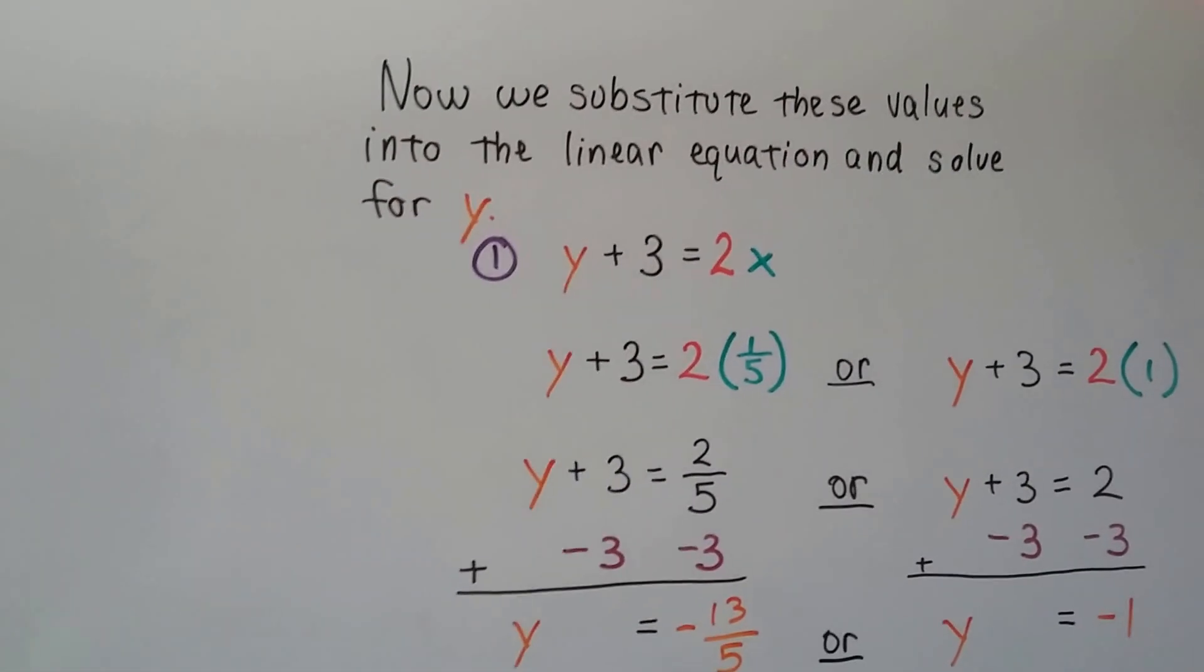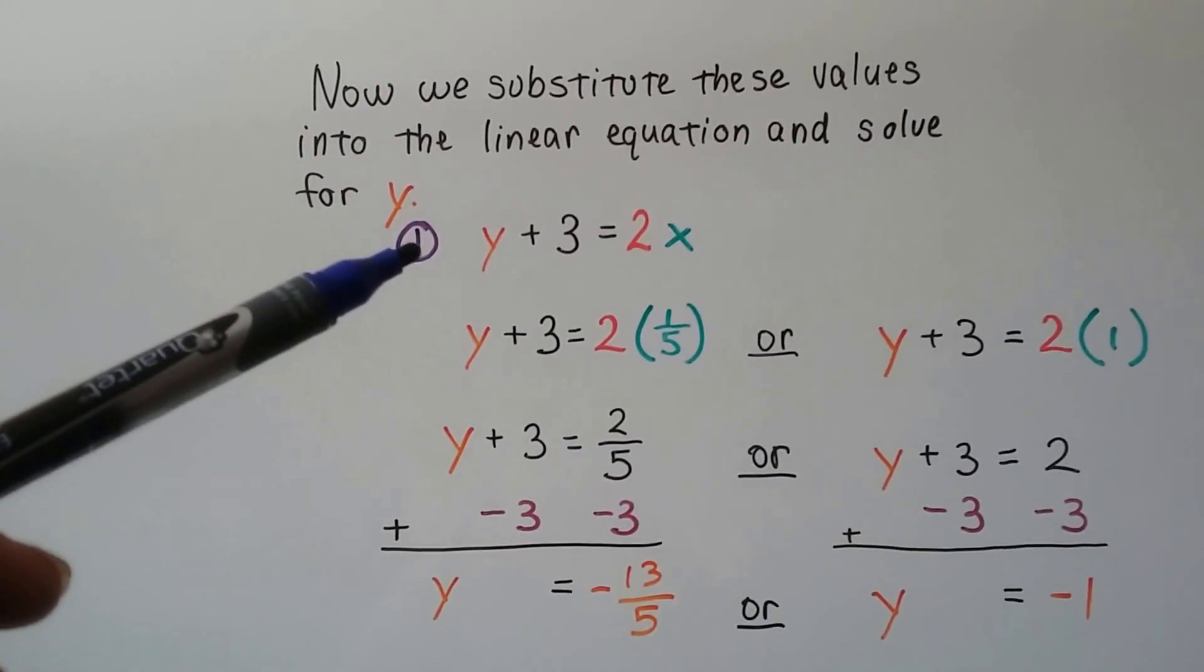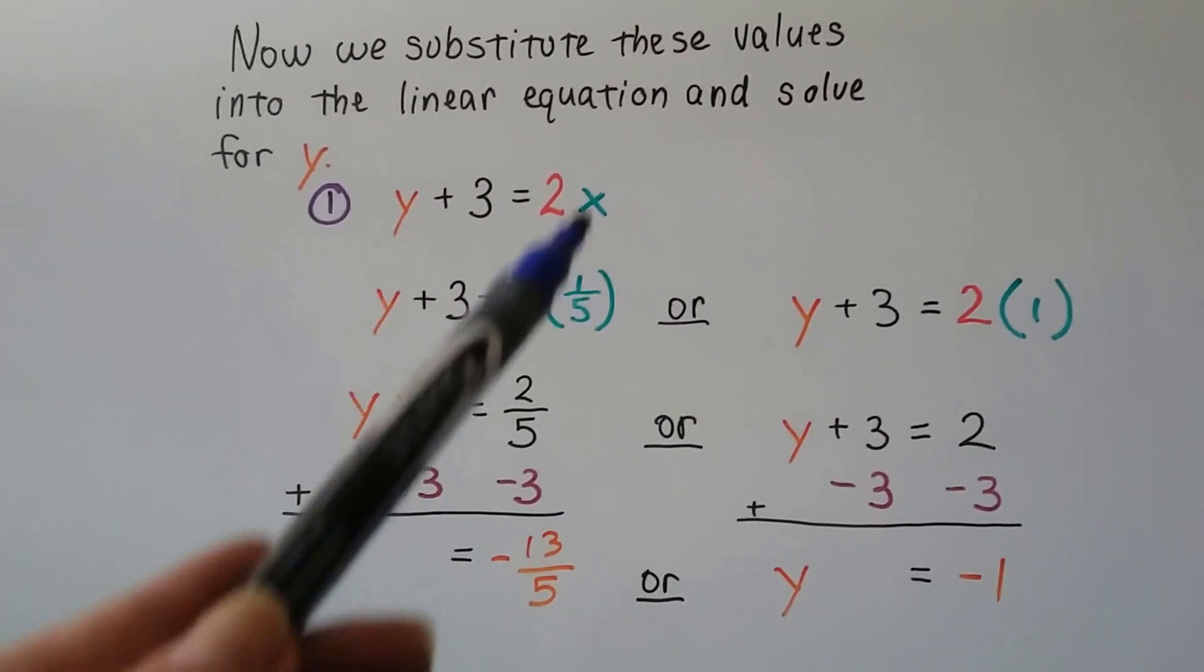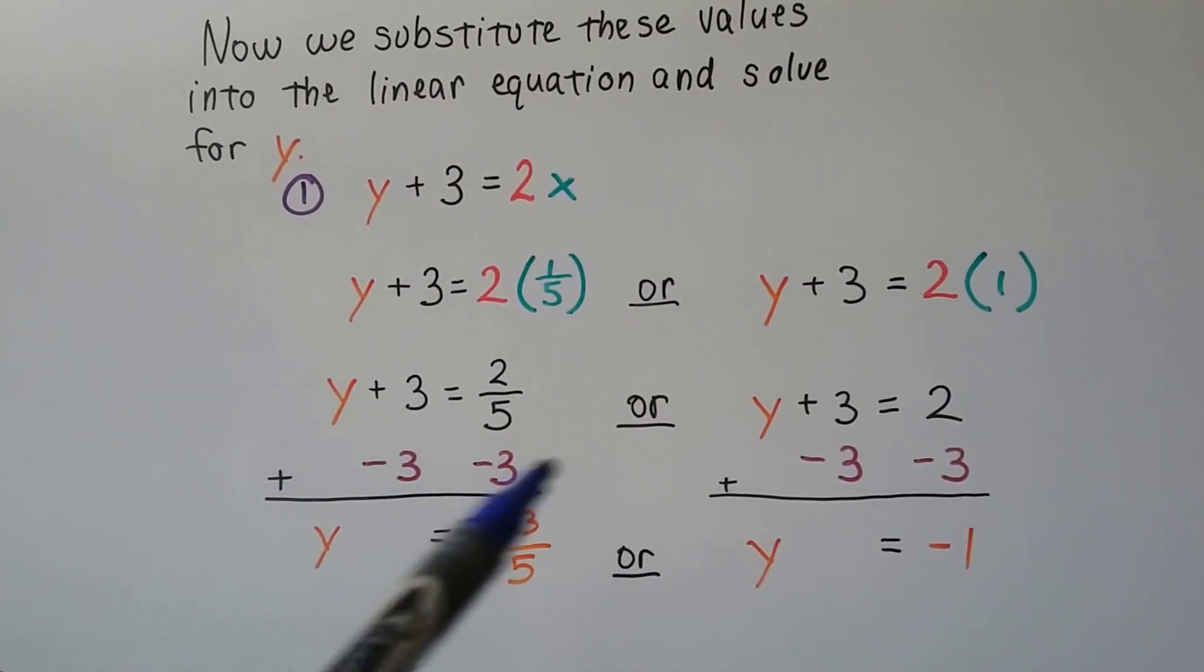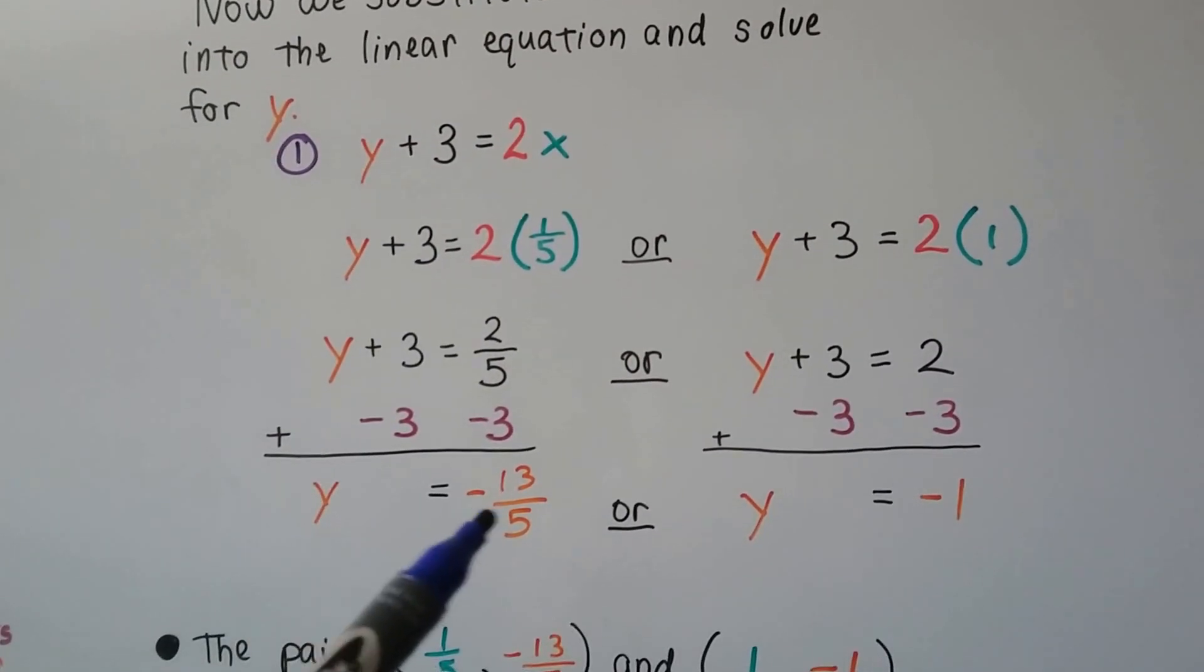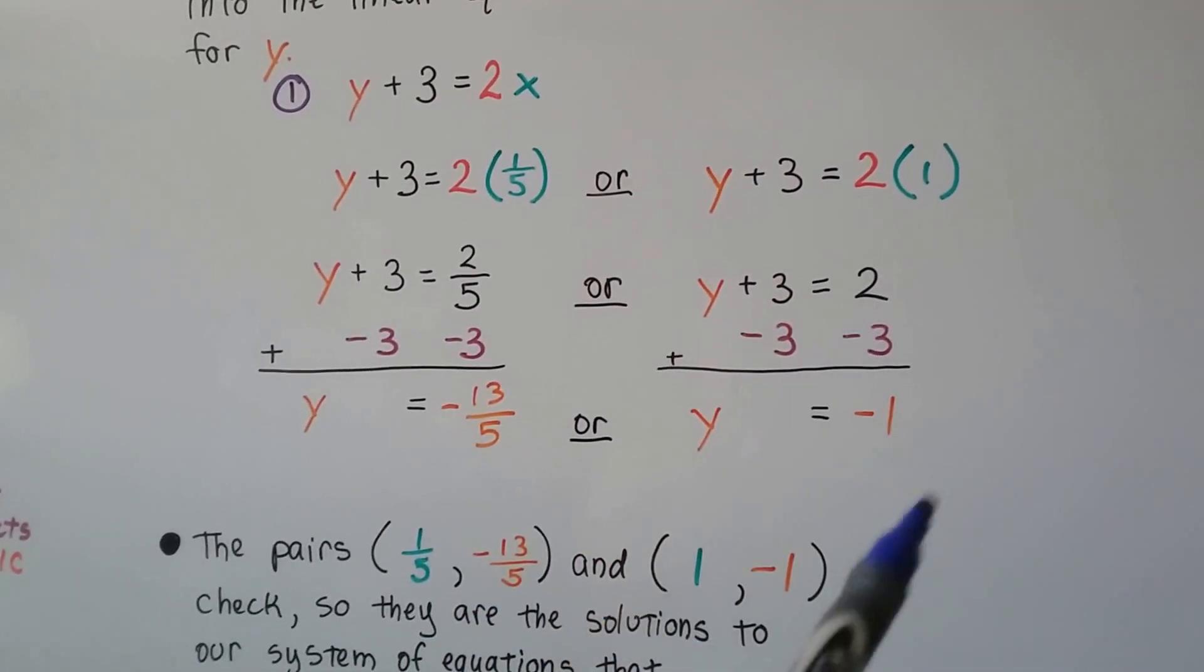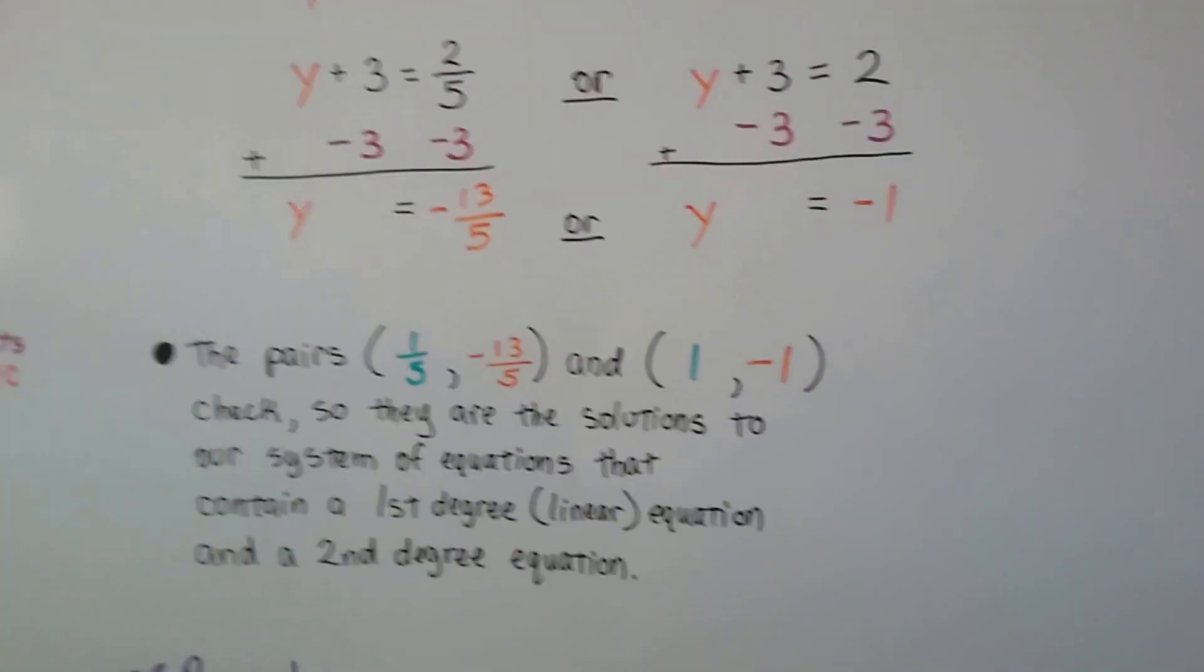Now we substitute these values into the linear equation and solve for y. We go back to our first equation, y + 3 = 2x. We're going to substitute our 1/5 and our 1 into here. If it's 1/5, we're going to multiply that in place of x, and we're going to get 2/5. We can add a negative 3 to each side to isolate y. So we have y = -13/5, or we can multiply it by that 1, and we get 2.